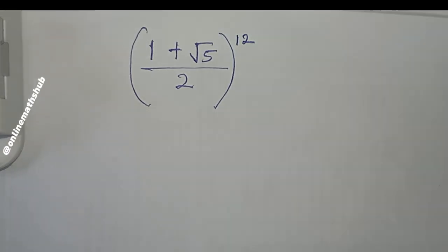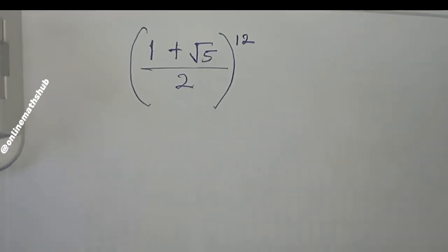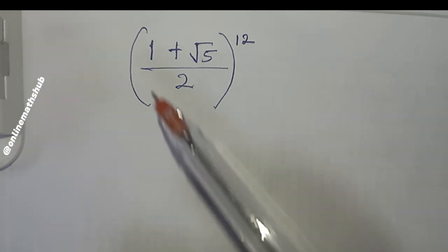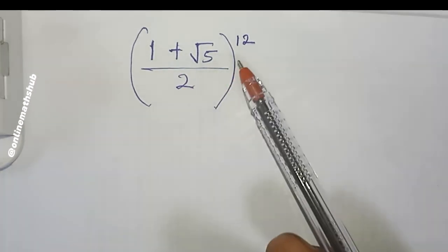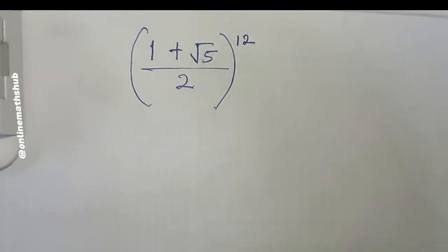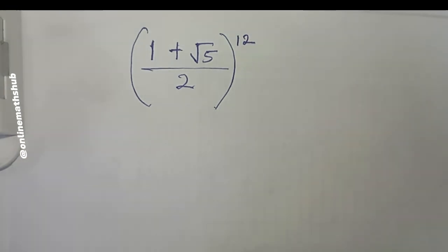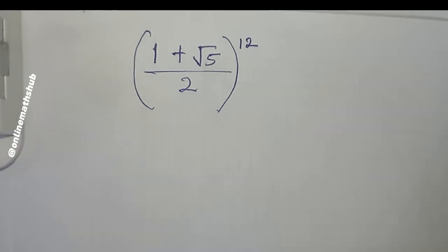Hello friends, welcome back to Online Mass Talk. We have this problem to simplify right here. The equation is asking us to simplify ((1 + √5) / 2)^12. So what is going to be the value of this expression? We're going to be simplifying this problem in this video.